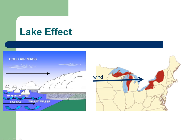We also have lake effect snow — you may have heard of this if you've ever lived in New York. When wind flows over a large body of water, it gathers more moisture. And when it reaches land, it dumps the moisture. Wind flows mainly west to east across the United States, so when wind travels over the Great Lakes, it tends to produce snow on the far side of the lakes.